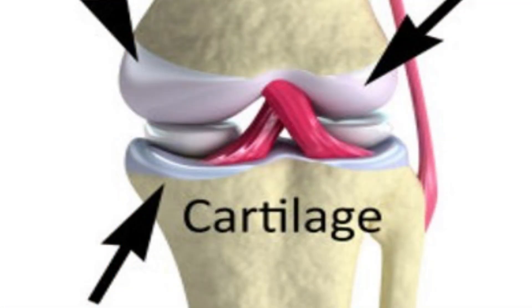Osteoarthritis is a form of chronic degenerative joint disease that primarily stems from the destruction of cartilage, which helps in cushioning the joint. This is the reason why most people with osteoarthritis experience joint pain and joint stiffness.